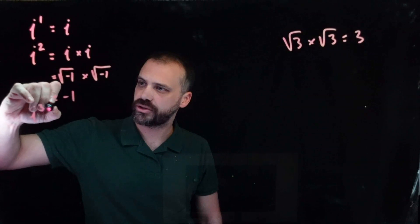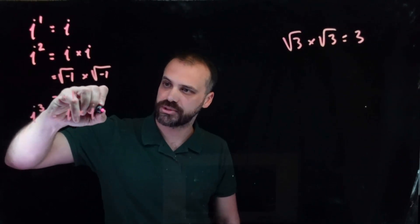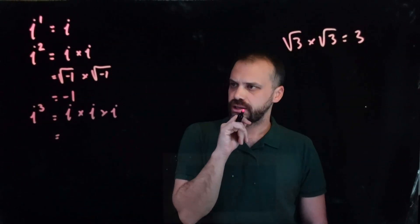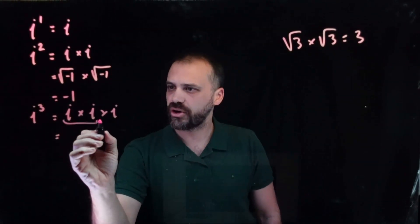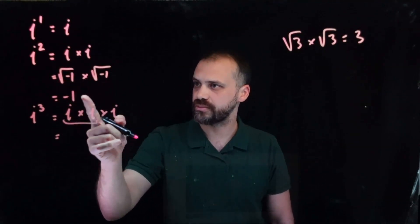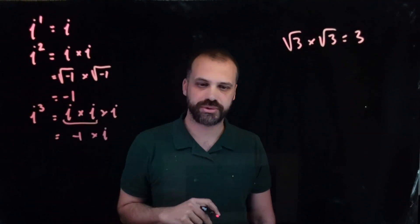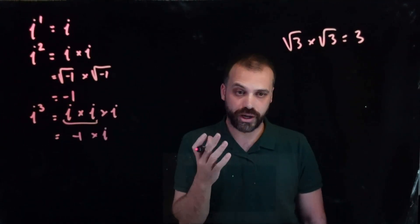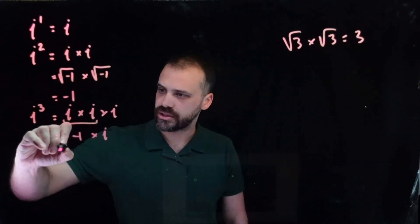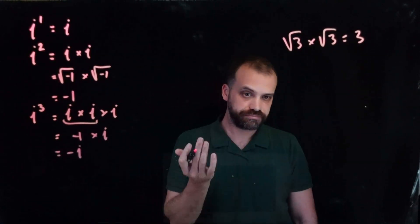What about i cubed? Well, that's equal to i times i times i — three of those. We know what i times i is already — we just figured that out. i times i is equal to negative 1. And then we have negative 1 times i. Negative 1 times anything is equal to the negative of that something, so negative 1 times i is negative i.